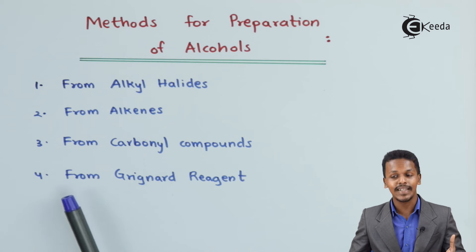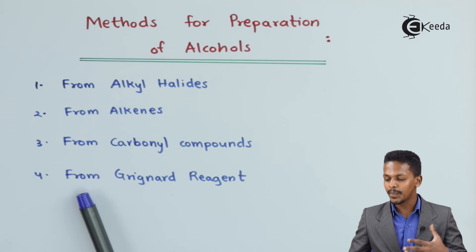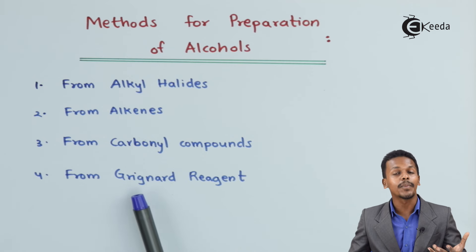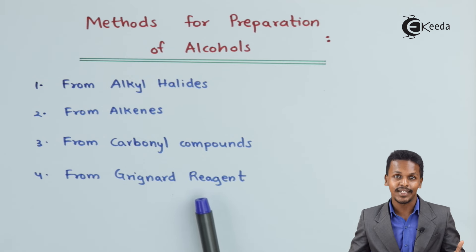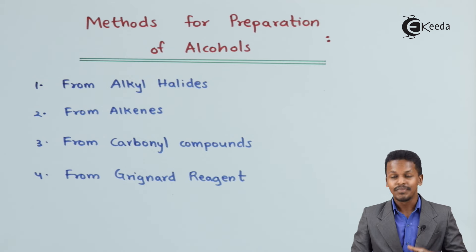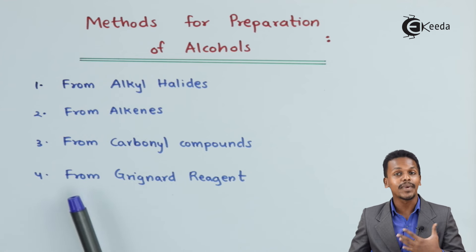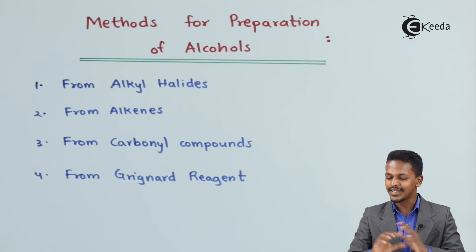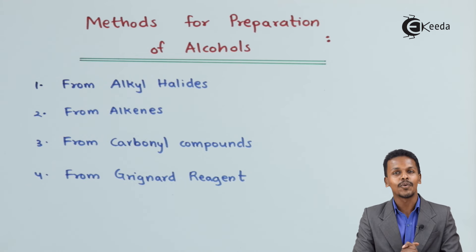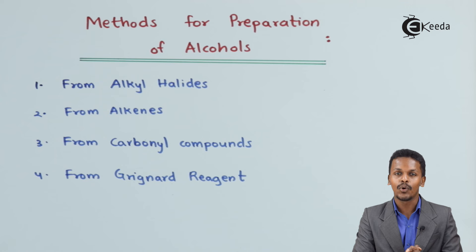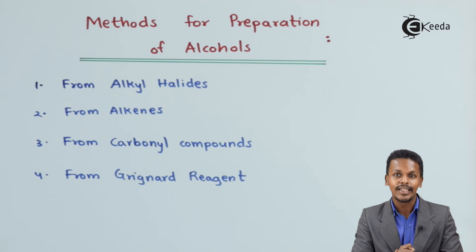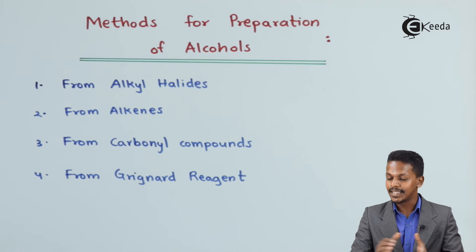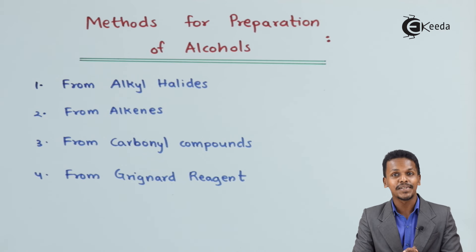The last method is that we can easily prepare alcohol from Grignard reagent. Primary, secondary, and tertiary alcohols can also be prepared using this method. This was a brief overview of how we can prepare alcohol from these different chemicals.